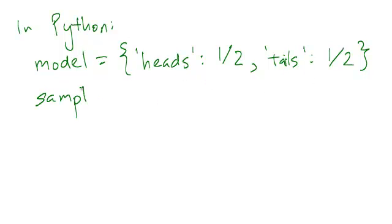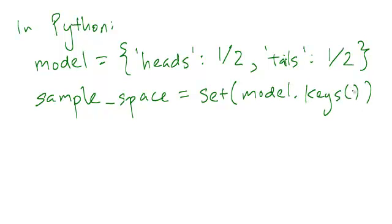We can figure out what the sample space is by just looking at the keys of the dictionary. The sample space is going to be the set of model dot keys. The reason why I have set outside is because if you just do model dot keys, it'll actually return a type that's not a Python set. It's going to be a set of dictionary keys, which is its own type, but to turn that into a set, you can just do set outside.